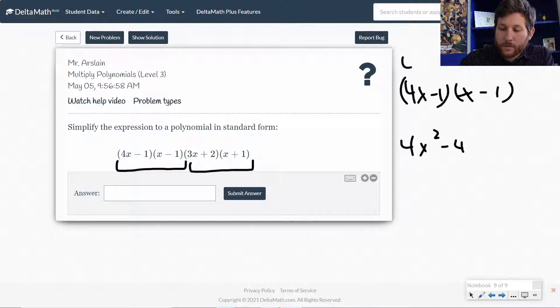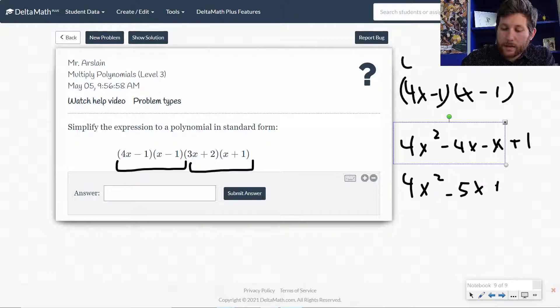4x times x, 4x squared, minus 4x, minus x, plus 1. Or I could rewrite that as 4x squared, minus 5x, plus 1. All right, so there's a trinomial.